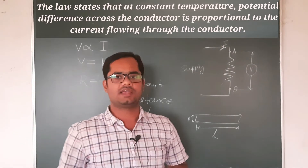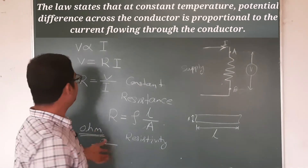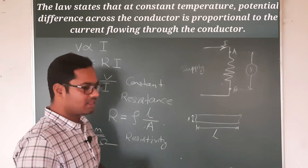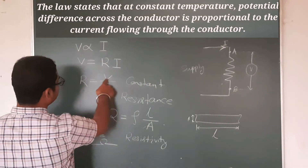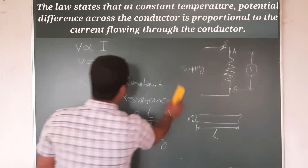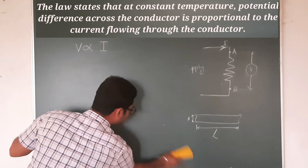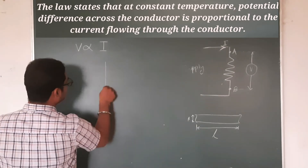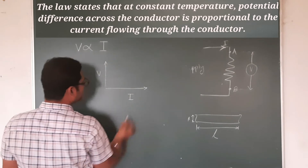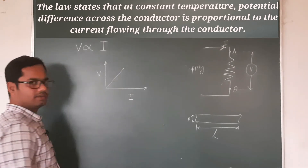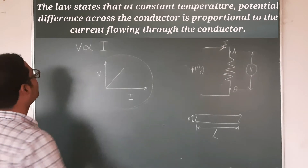Another symbol for resistance is the omega symbol. If you want to find out the relationship — the linear relationship between V and I — you can draw a graph of a straight line. This graph will indicate Ohm's Law.